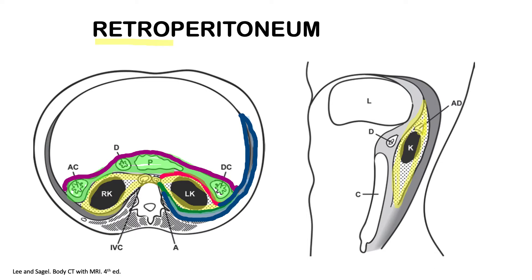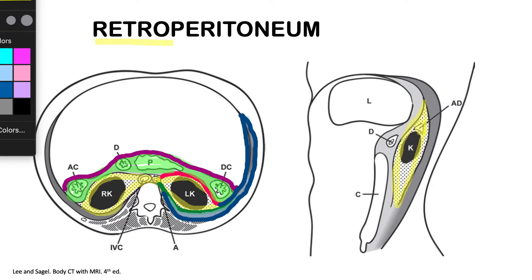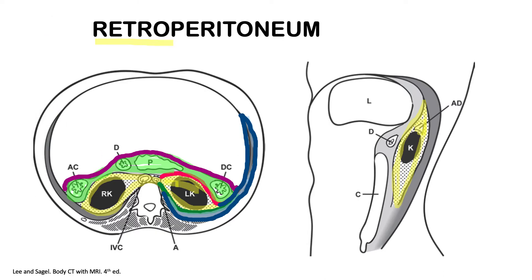Going back to the yellow-colored area containing the kidney — this is called the perirenal space. On the sagittal image on the right, we can see that superiorly it is closed, but inferiorly it is open. Therefore, if you have abnormalities in the upper retroperitoneum, they can spread into the pelvic extraperitoneal spaces.